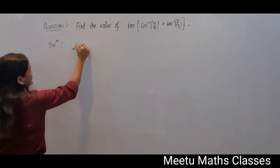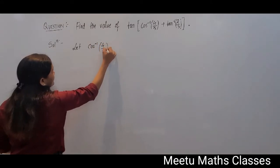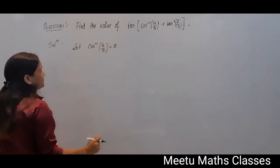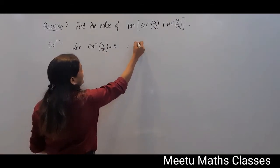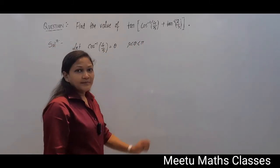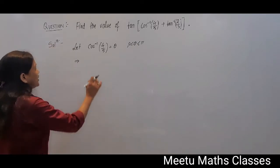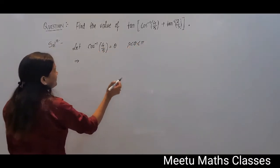So let cos inverse of 4 by 5 equals theta. That will imply theta must lie in between 0 to pi, because cos inverse ka domain 0 to pi hota hai. So cos inverse ka range is 0 to pi.